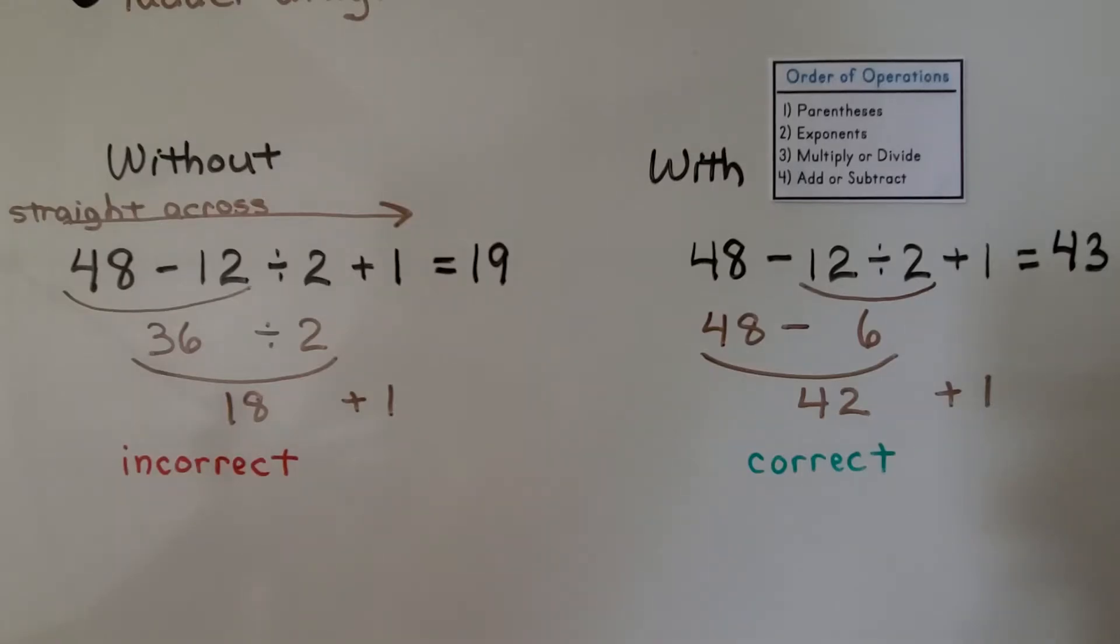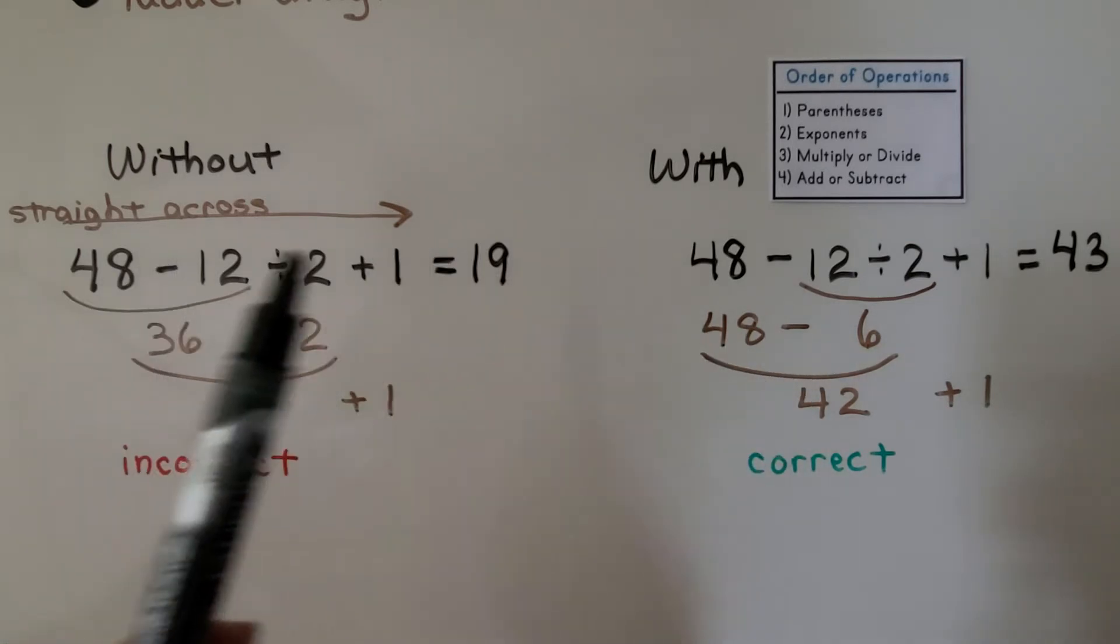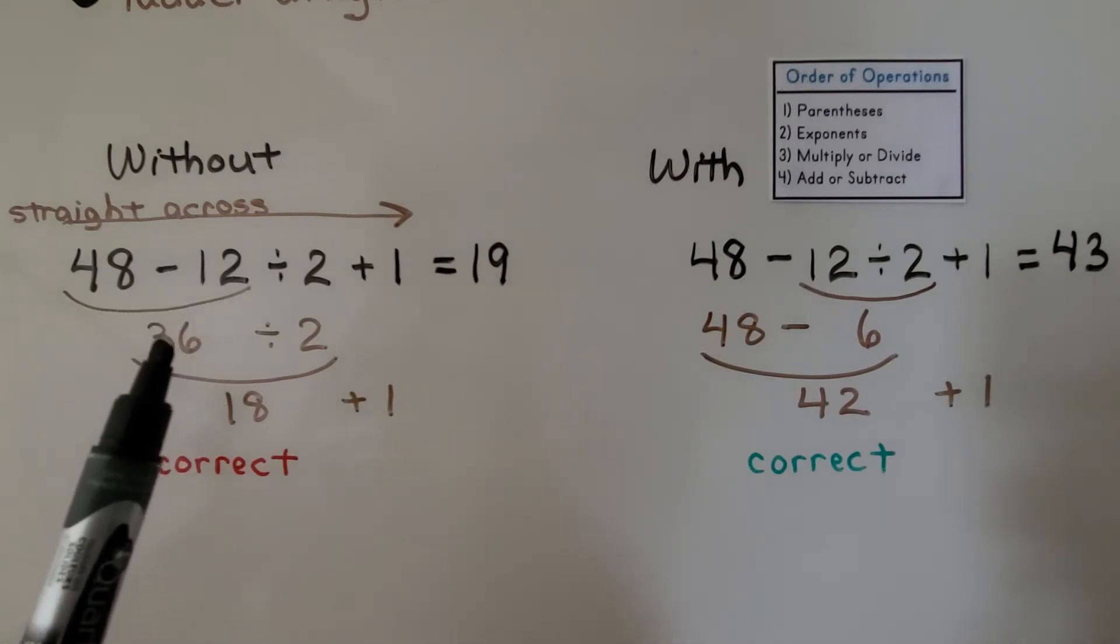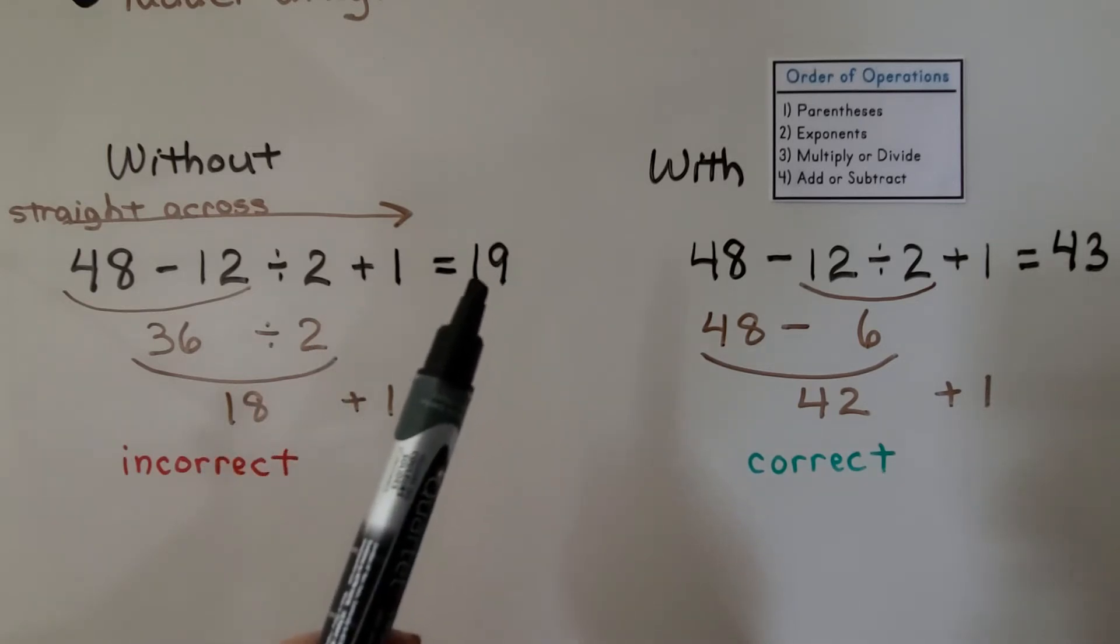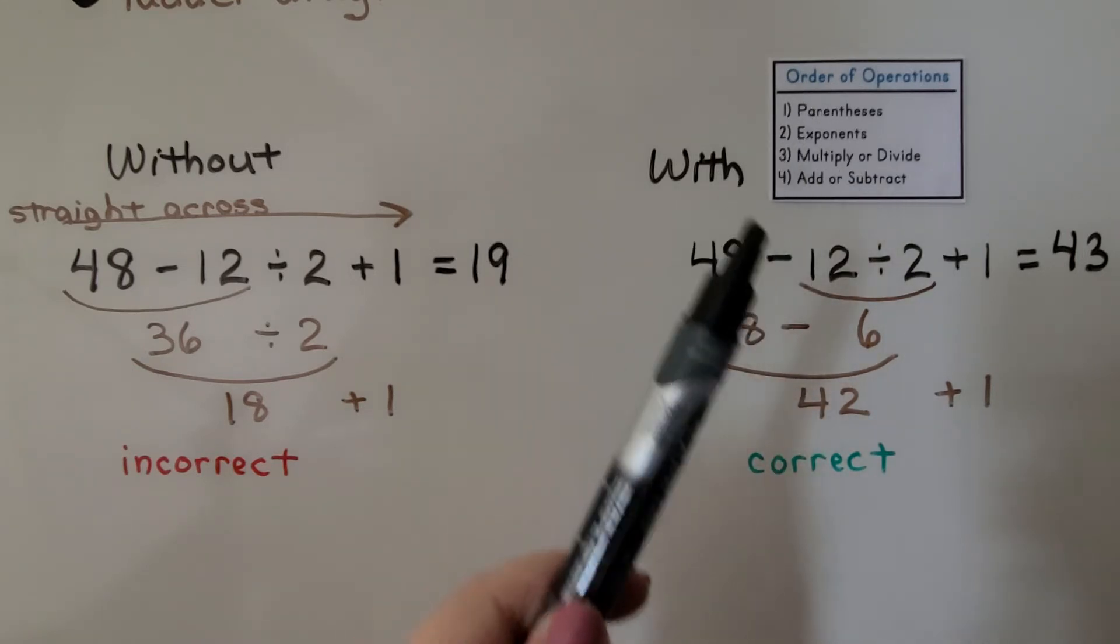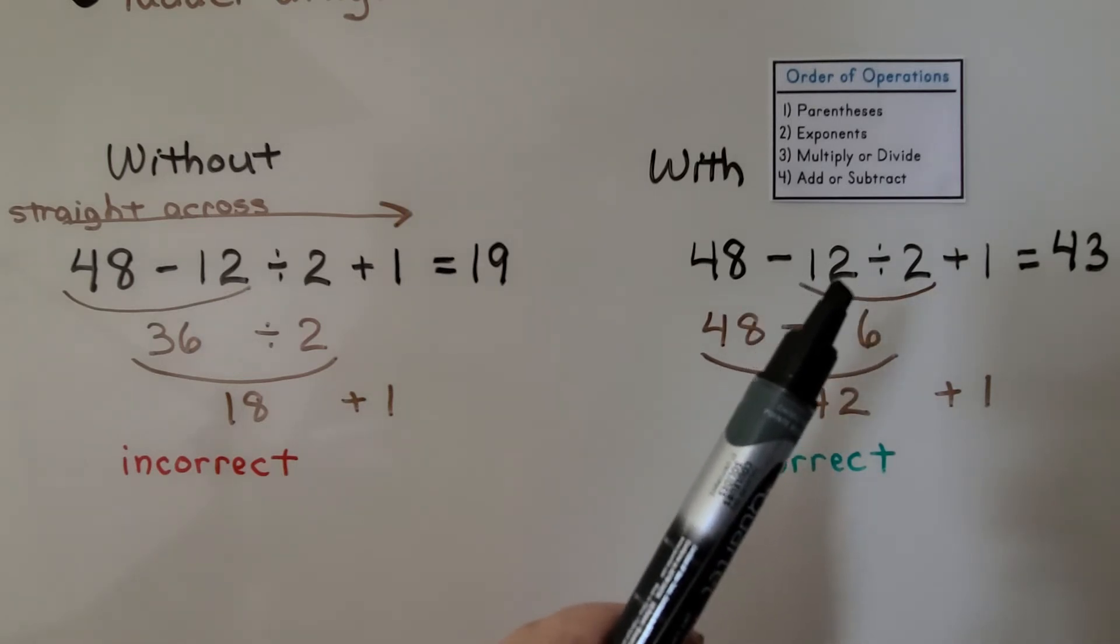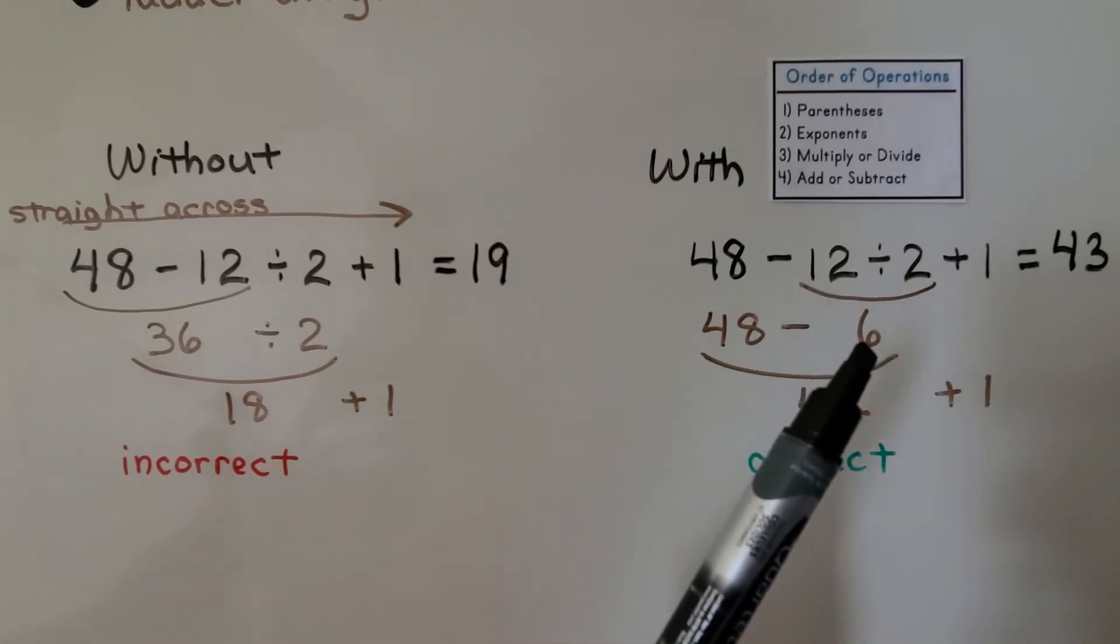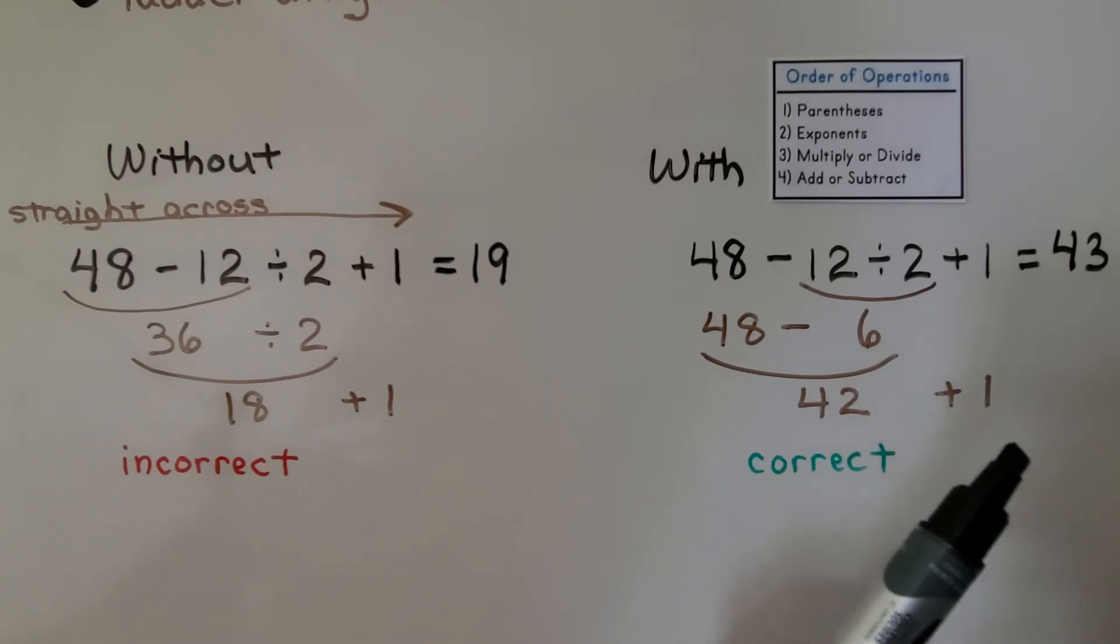We can compare two expressions without using the order of operations and with. If we go straight across, we have 48 minus 12. That's going to give us 36. Then if we divide it by 2, we'll have 18. Then if we add the 1, we'll have 19. If we use the order of operations, we're going to do the division first. There's no parentheses, so we skip that step. There's no exponents, so we skip that step. There's no multiplication, so we go right to the division. That's going to give us a 6. Now we have 48 minus 6, which gives us 42. Now we add the 1, that gives us 43. We get two completely different answers.